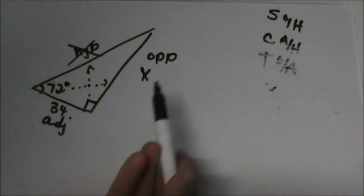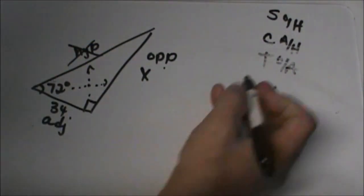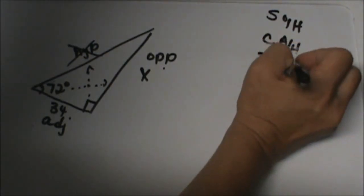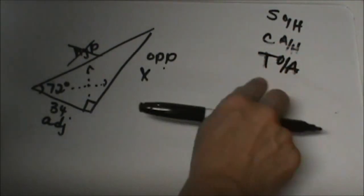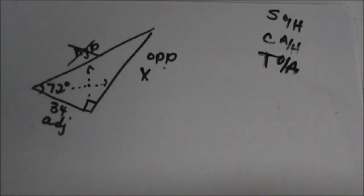So we are not using hypotenuse. So which one uses opposite and adjacent? Opposite adjacent is tangent. Opposite adjacent is tangent. So let's see if you can do this.